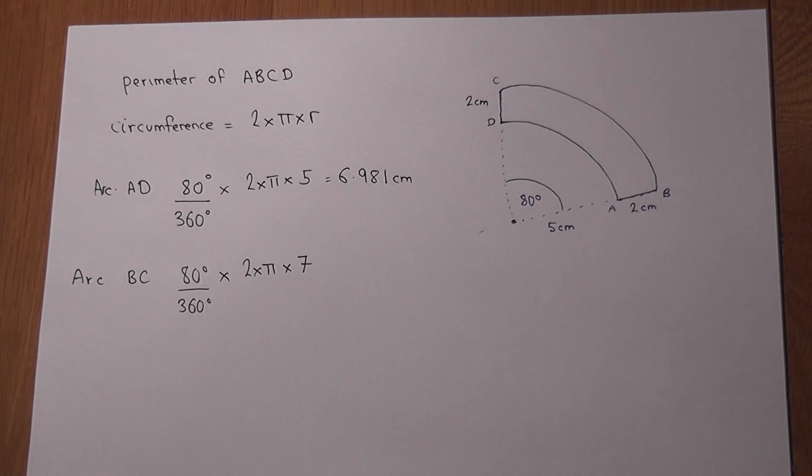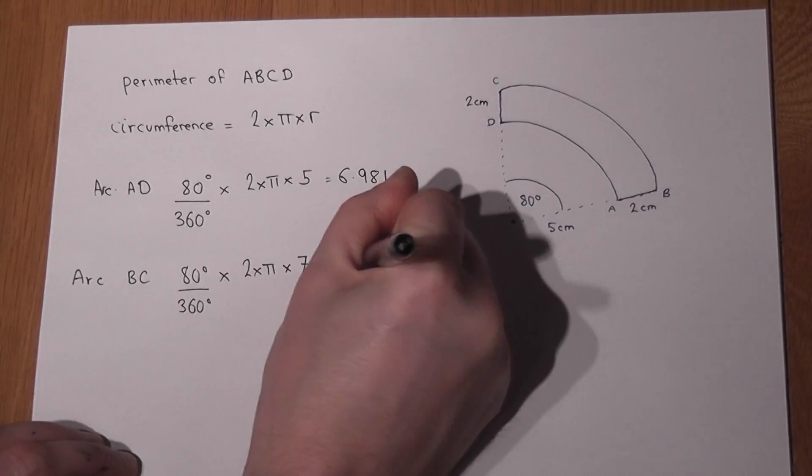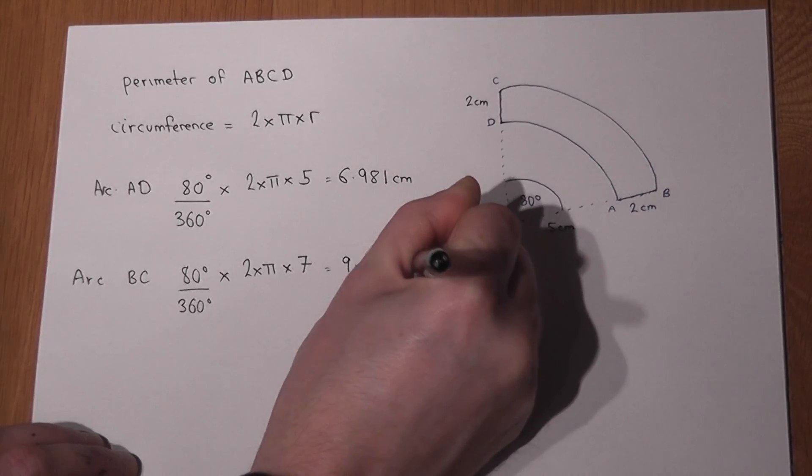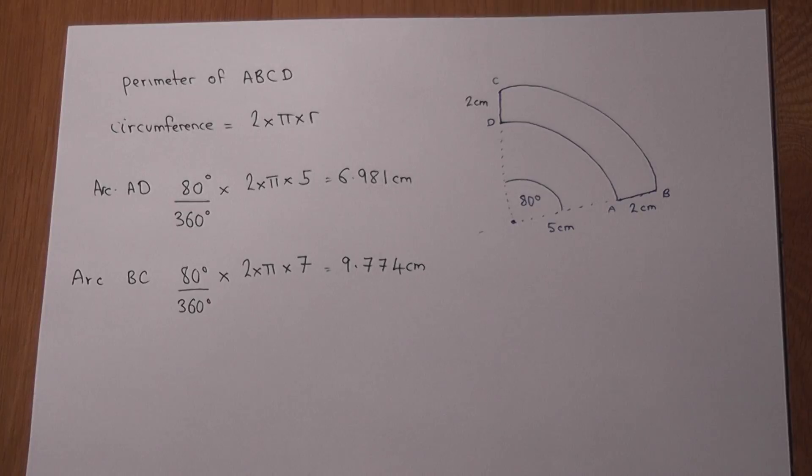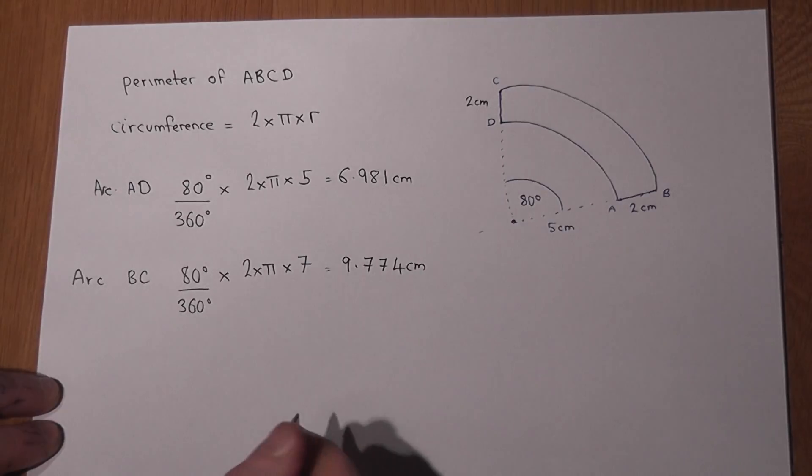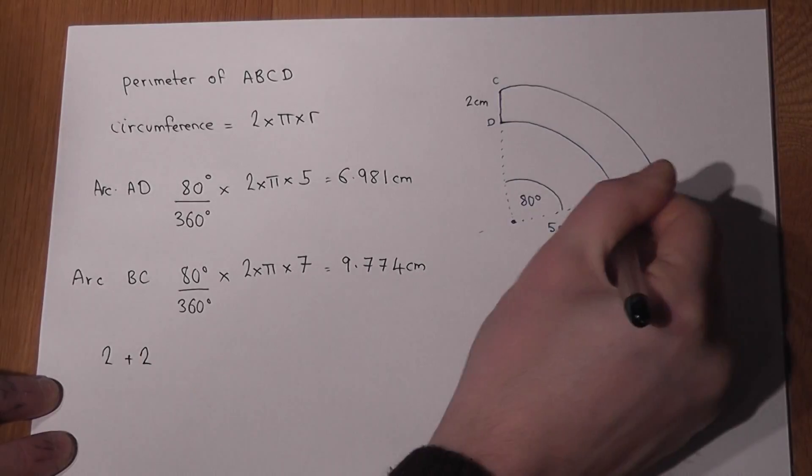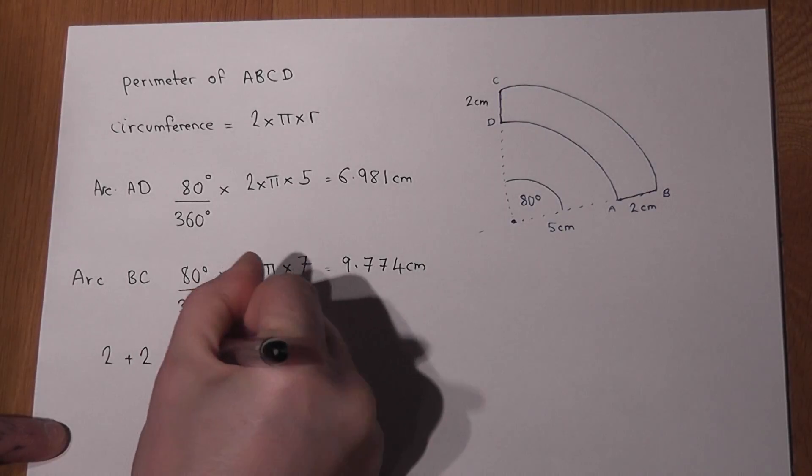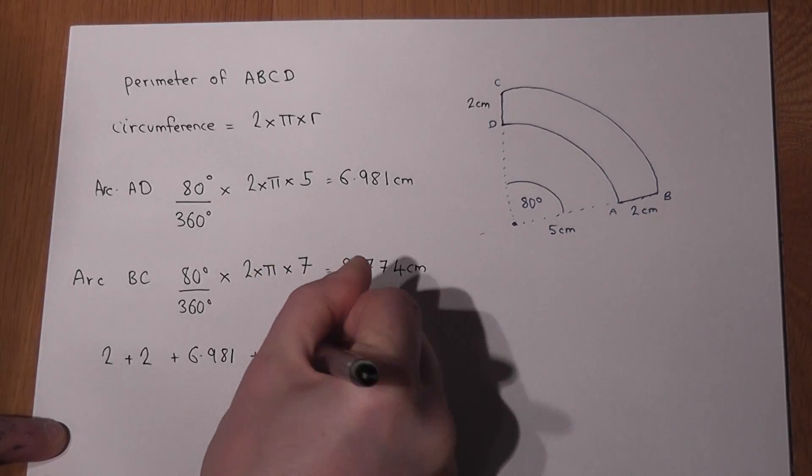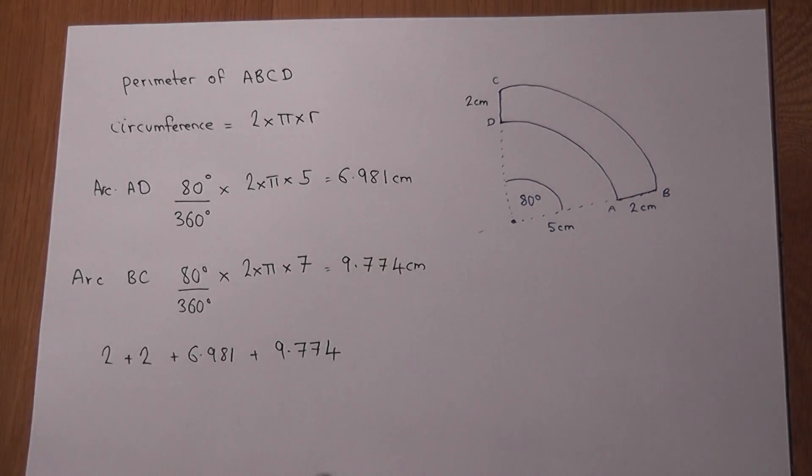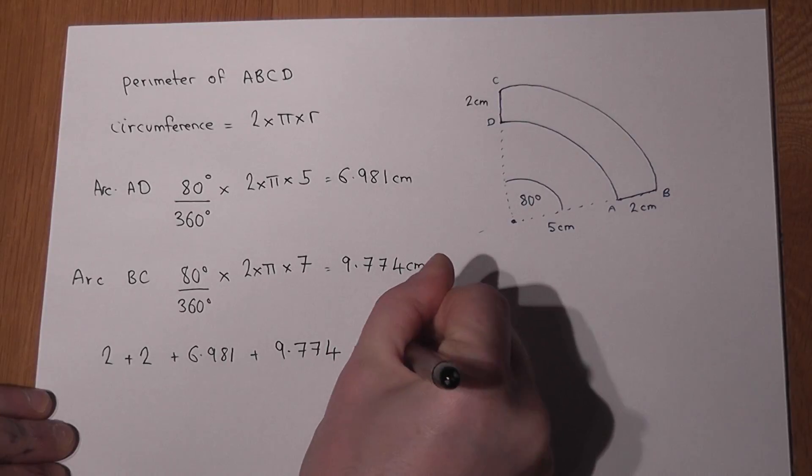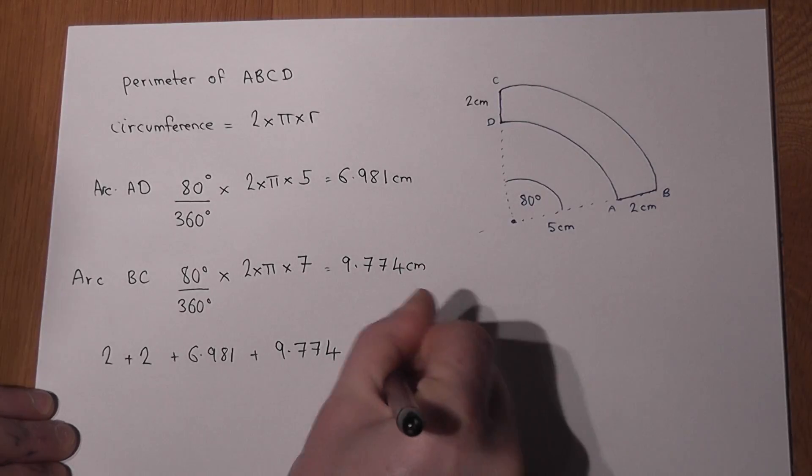80 divided by 360 times 2 times pi times 7. So the full perimeter of the entire shape is 2 plus 2, the two straight edges, plus the 6.981cm plus the 9.774cm. Which if I work it all out, just to 1 decimal place works out to be 20.8cm in total.